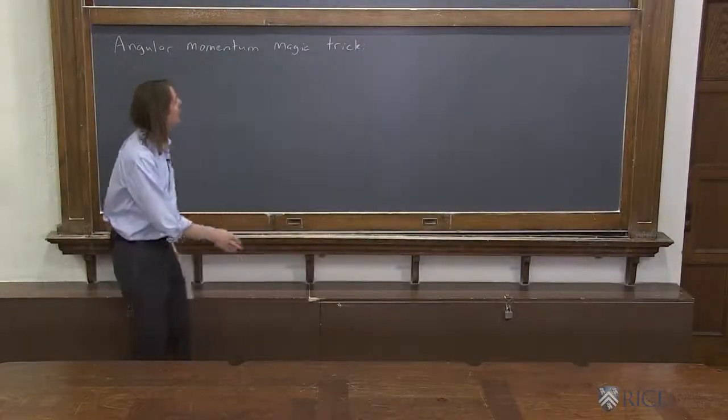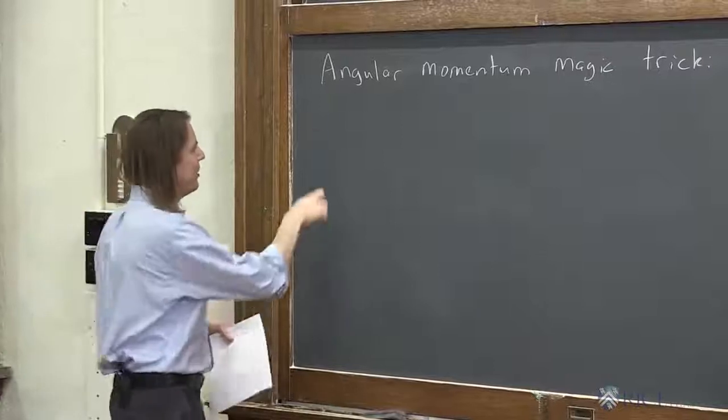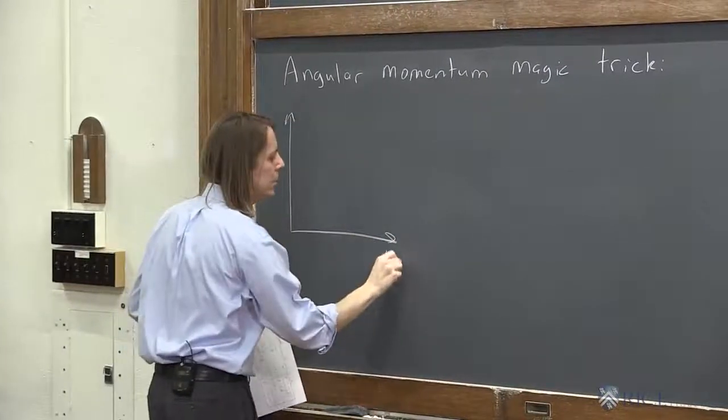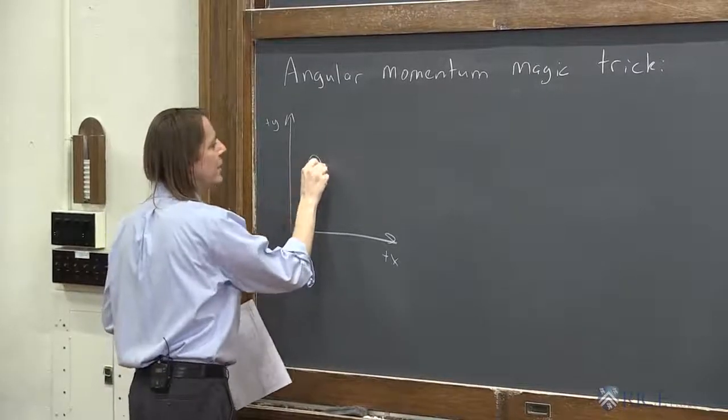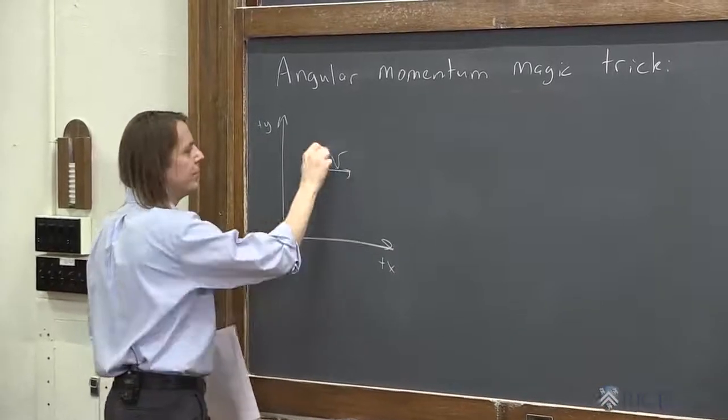To help us solve our little conundrum, we're going to do an angular momentum magic trick. So let's think about that disk, or really any mass, moving in an x, y coordinate system and just translating along at v relative to some origin, like that.